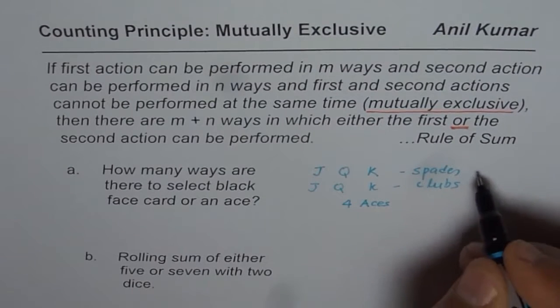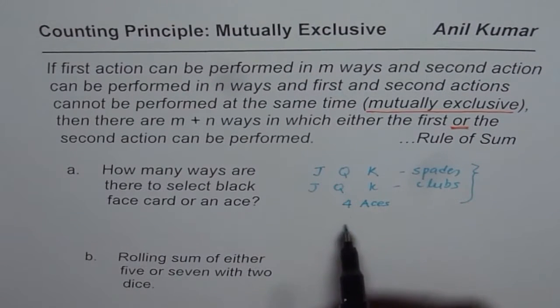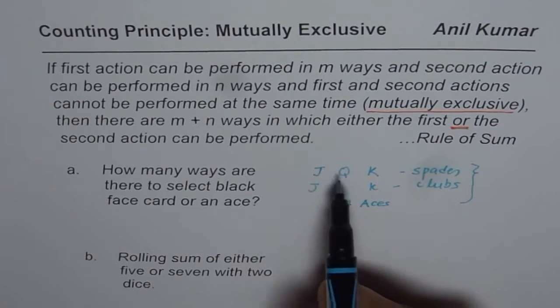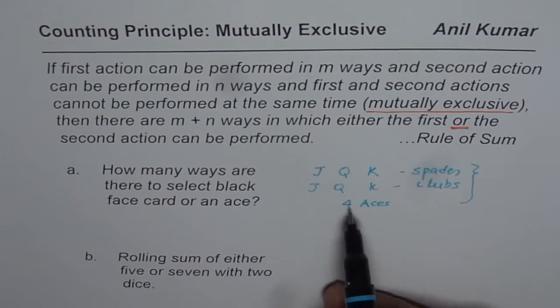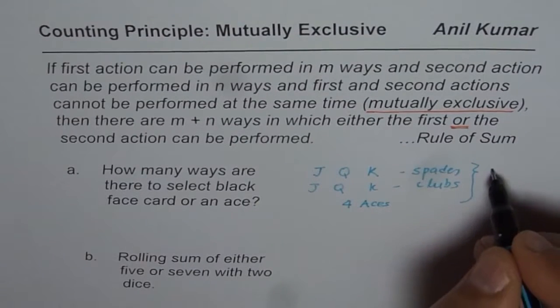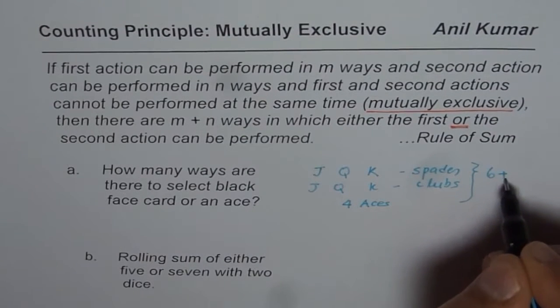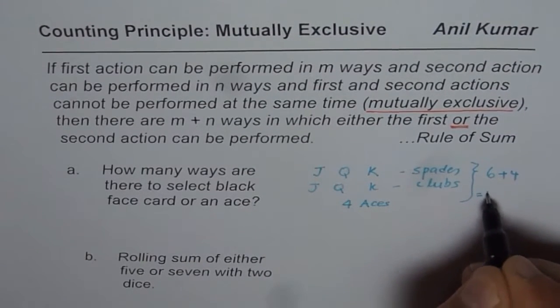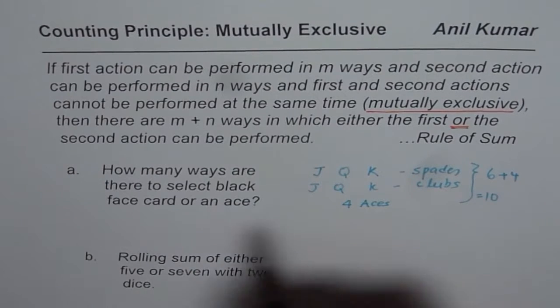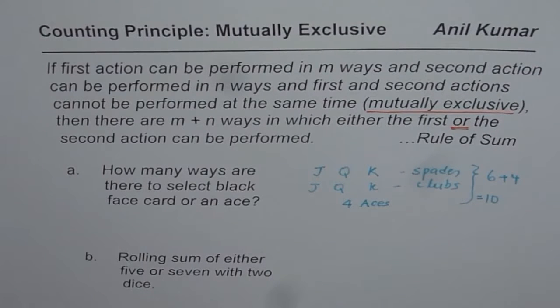So in total, what we have is: add them up. It is six plus four, which is equal to ten. This is the rule — very simple.